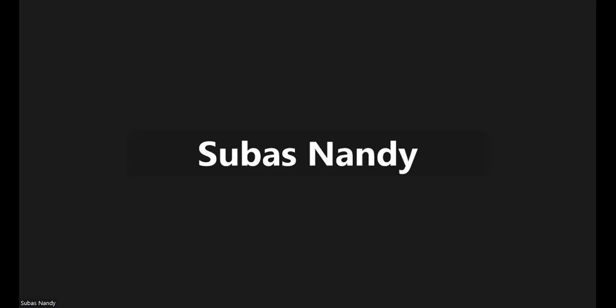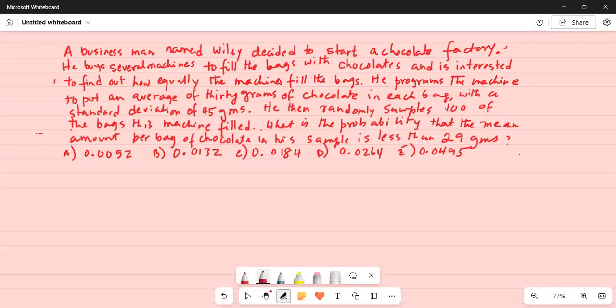So we will solve this problem which I'll just share with you. It says a businessman named Wiley decided to start a chocolate factory. He buys several machines to fill the bags with chocolates and is interested to find out how equally the machines fill the bags. He programs the machine to put an average of 30 grams of chocolate in each bag with a standard deviation of 45 grams.